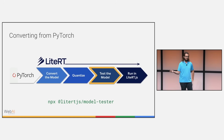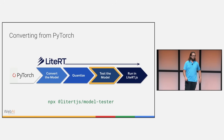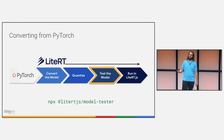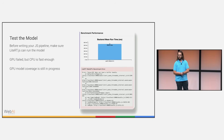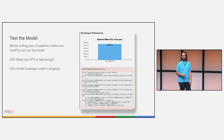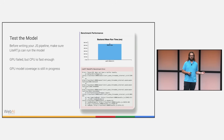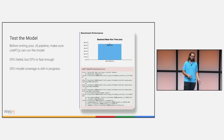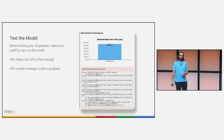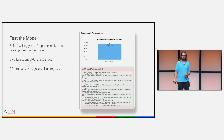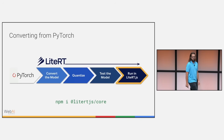With that done, we can now test the model using the LightRT.js model tester. If you run the NPX command, you can run this locally on your computer right now. We upload the model to the local web page it runs on. We can see we're running on CPU at about 550 milliseconds, but GPU actually failed. This is a very good way to make sure that what you've converted actually works. For our demo purposes, the CPU performance is good enough.